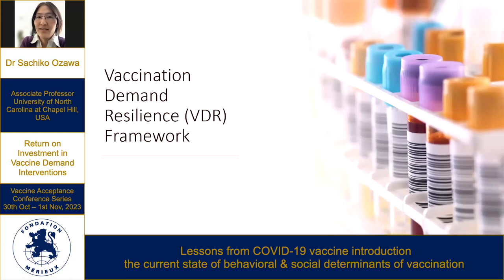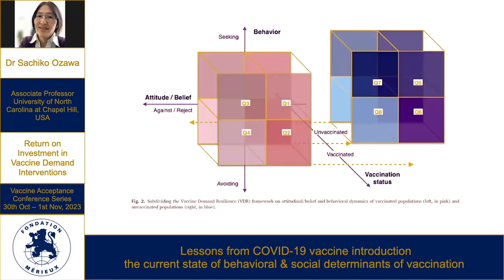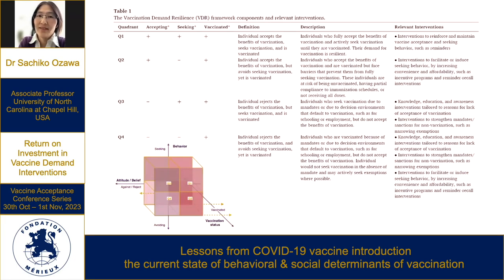Finally, I wanted to briefly show the vaccine demand resilience framework that I published this summer — a way to think about how to increase and maintain high immunization coverage across three different axes: behavior, attitudes, and vaccination status. We looked at eight quadrants created by that framework and what it means to build vaccination demand resilience within a population, because even though people may already be vaccinated, it doesn't mean they are actually accepting or actively seeking the vaccine. We examined what potential interventions may be appropriate for each of those quadrants.